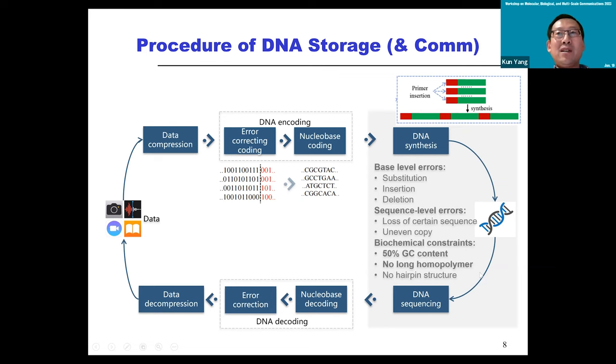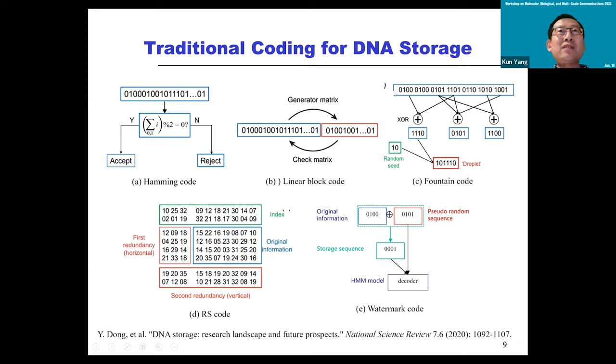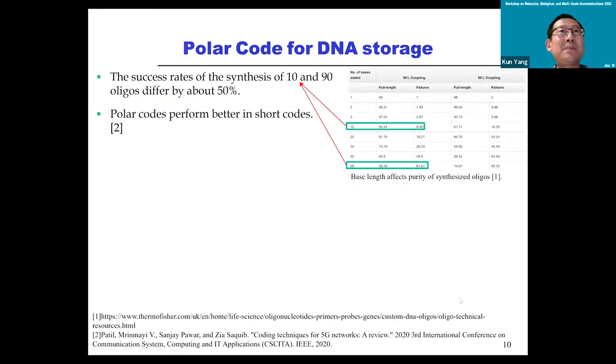So that's the whole process. In terms of coding, the first thing researchers did was to apply our traditional communication coding for DNA storage. Here you can see the famous Hamming code, linear block code, fountain, RS code, and watermark code. They are all applied for storage as well. For detailed information you can refer to this very interesting paper here.